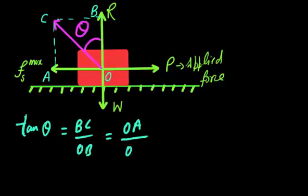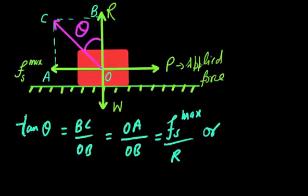OA over OB equals Fs max over R. So in this manner we can define it. I am going to write the basic definition of mu s. Mu s equals Fs over R. This is the coefficient of friction.